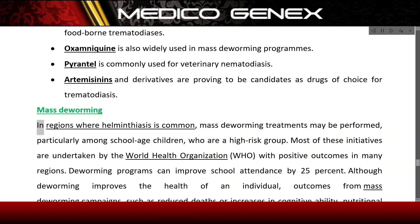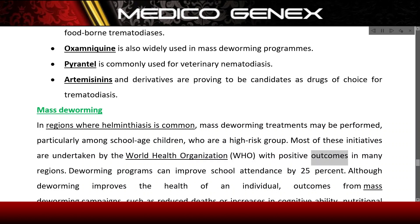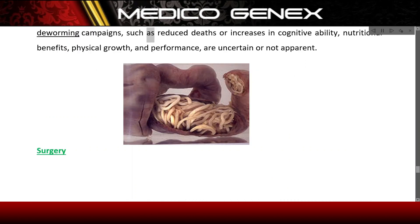Mass deworming. In regions where helminthiasis is common, mass deworming treatments may be performed, particularly among school-age children, who are a high-risk group. Most of these initiatives are undertaken by the World Health Organization with positive outcomes in many regions. Deworming programs can improve school attendance by 25%. Although deworming improves the health of an individual, outcomes from mass deworming campaigns such as reduced deaths or increases in cognitive ability, nutritional benefits, physical growth, and performance are uncertain or not apparent.